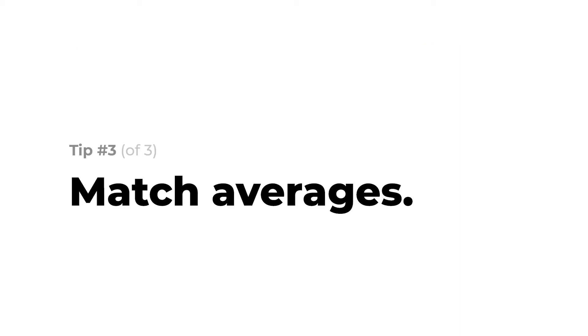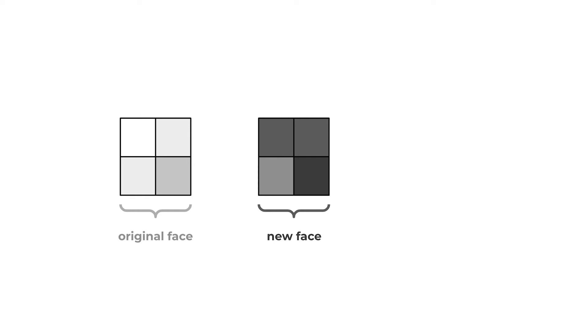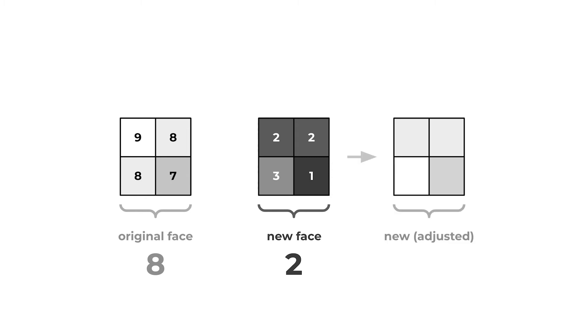One last problem: it's obvious the faces are pasted. On the right, the man's face is overexposed and more saturated than the rest of the image. On the left, the woman's face is clearly less saturated — the colors are less vibrant. To fix this, we match the average color intensities. Consider the original face and the new pasted face — the new face is much darker and needs to be lightened. Using the numeric representation of both images, we take their averages: 8 for the original face and 2 for the new face. To match their averages, we adjust by multiplying all values by 4, ensuring the new adjusted face has an average of 8, same as the original. We do this calibration for all patches in the new face.